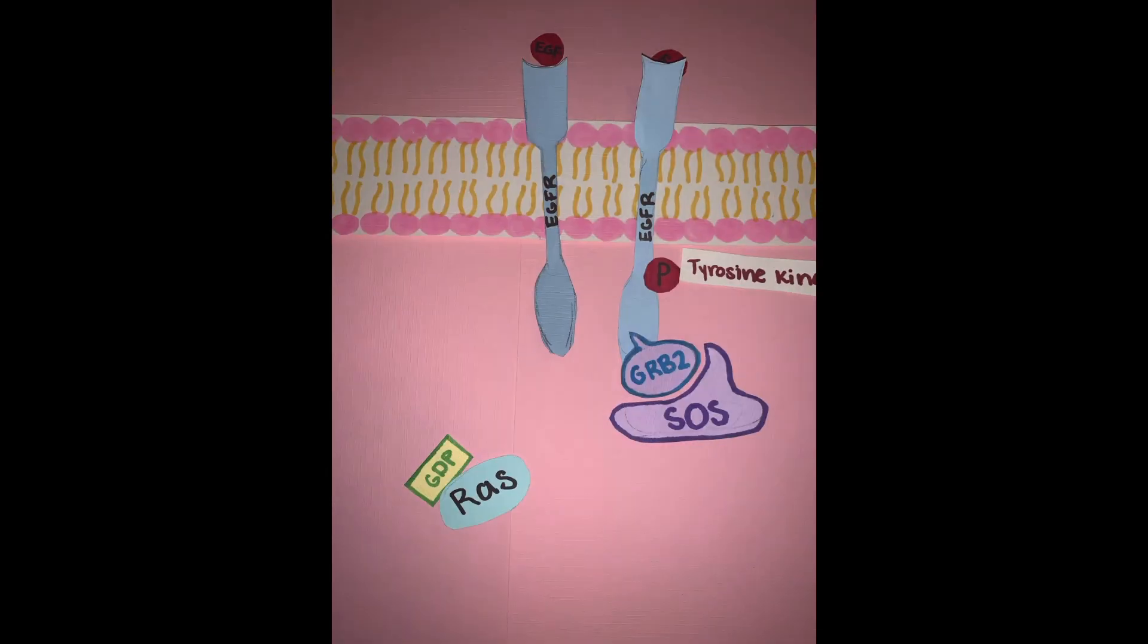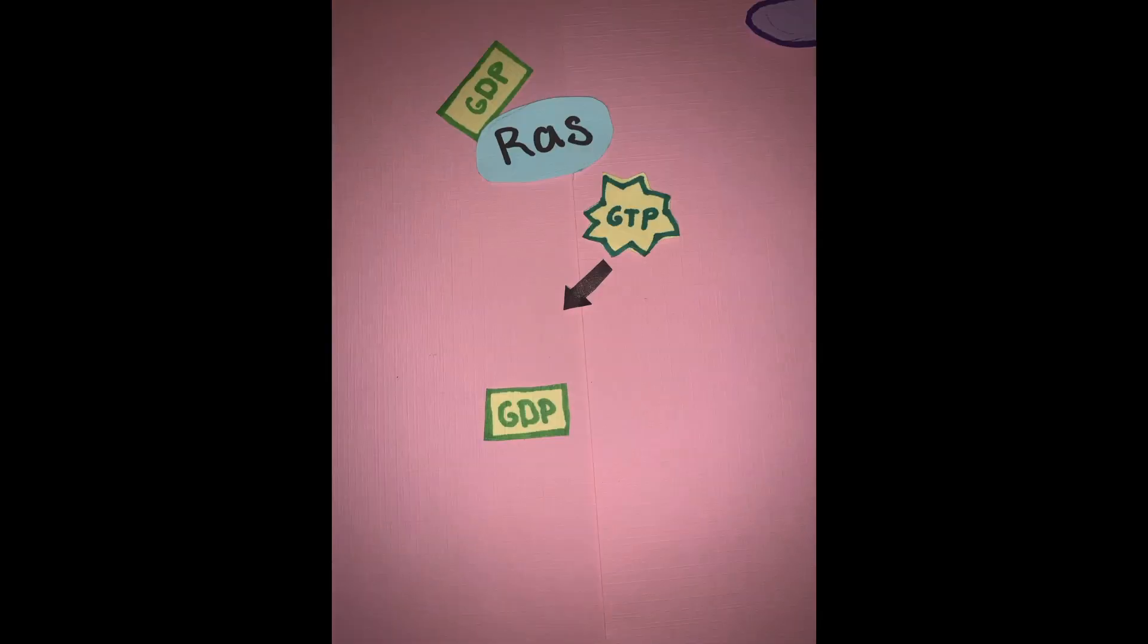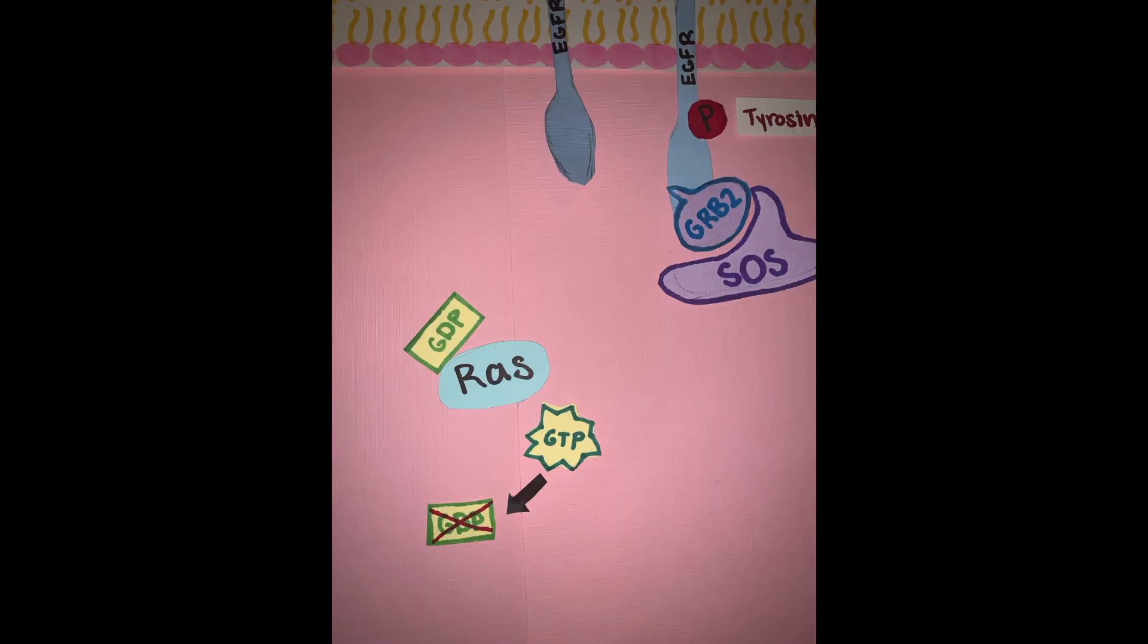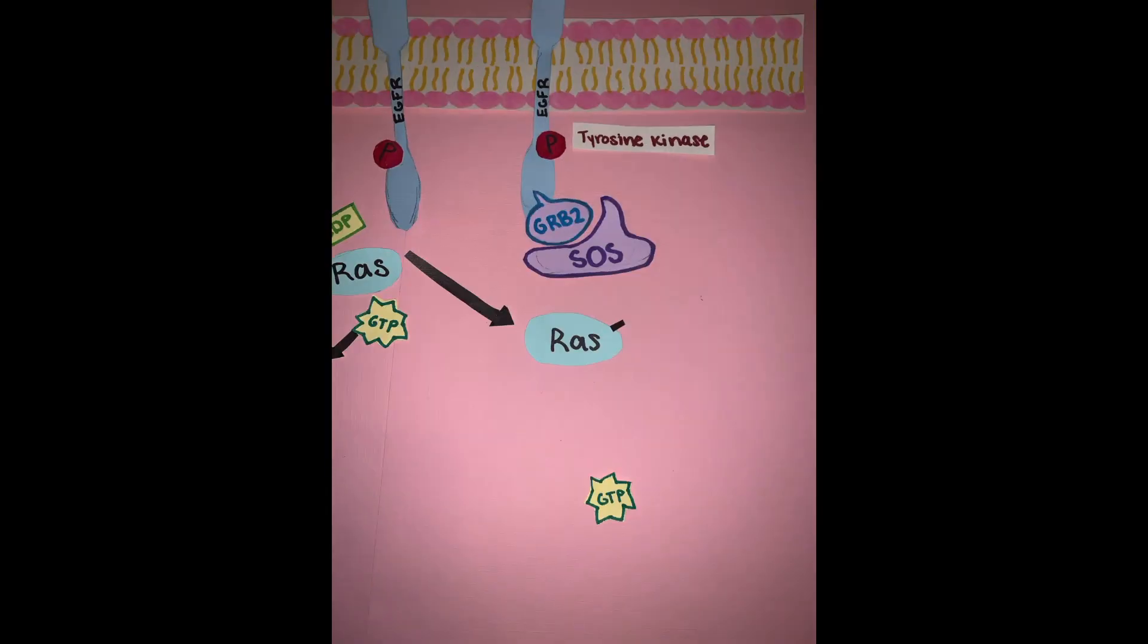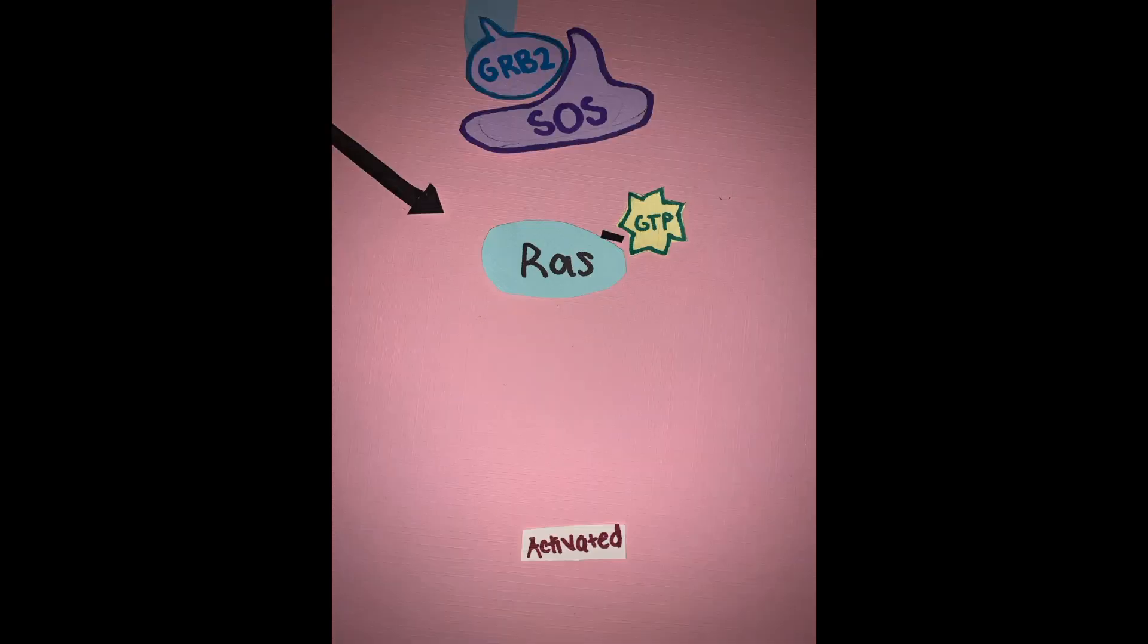Once RAS has been activated by SOS, GTP replaces GDP. At this moment, RAS has bonded with GTP instead of GDP.